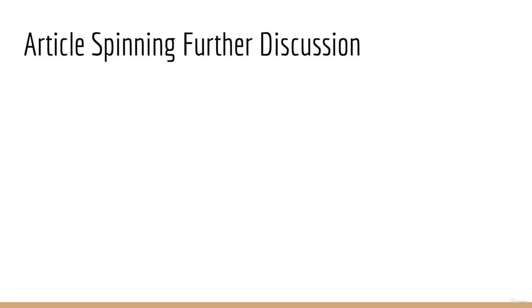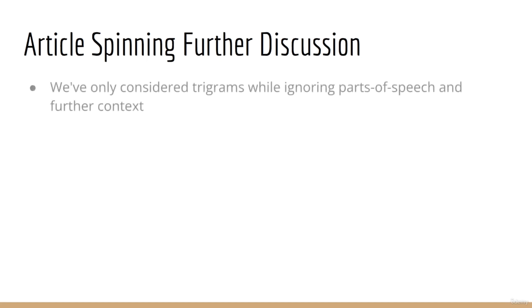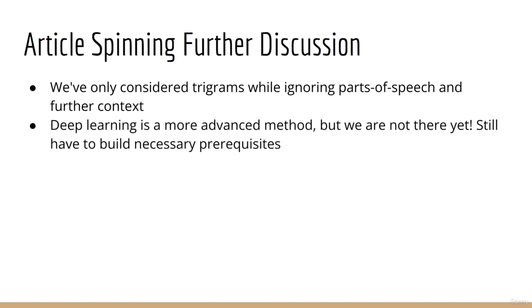Now, this article spinner doesn't seem to work that well — this should not be a surprise given that we are only using simple trigrams without considering parts of speech or other context. Recall that other techniques, especially those involving deep learning, can be applied to replacing a middle word given surrounding words. Unlike trigrams, deep learning techniques can account for more context and potentially learn hidden structure such as grammar and parts of speech. However, since we are not yet at that point in the course, you will have to wait until you're able to increase your knowledge. You must further gather the prerequisites you need in order to progress to those more advanced techniques.